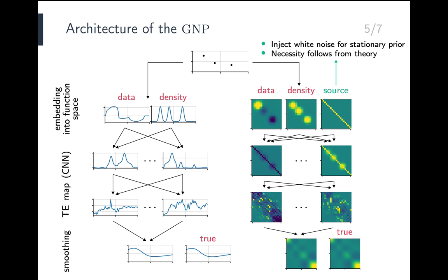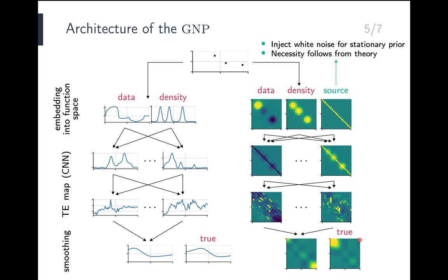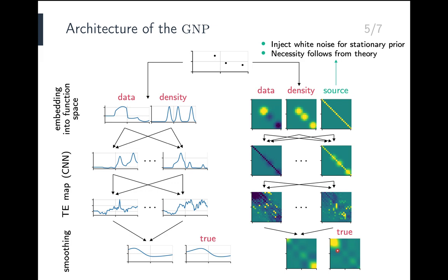We now demonstrate that this architecture is translation equivariant. Let's apply a translation to the data. Because the prior is stationary, the true mean and true kernel shift accordingly. The embeddings are translation equivariant, so the translation of the data directly propagates to the functional representations. Using that the CNNs are also translation equivariant, the channels also translate accordingly, which means the model's estimates again perfectly line up with the true.